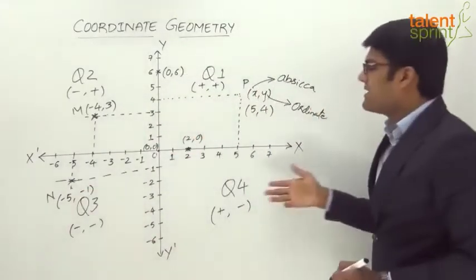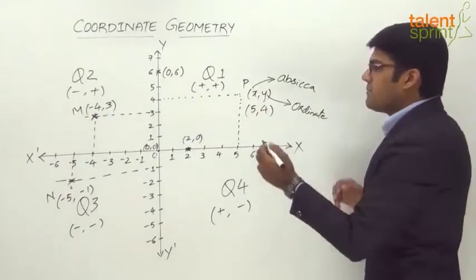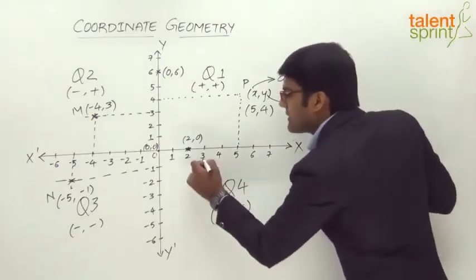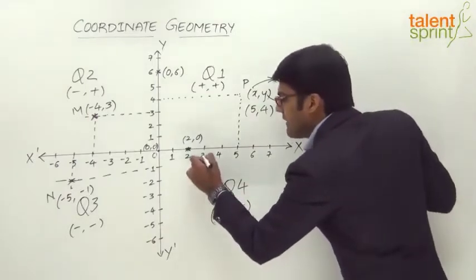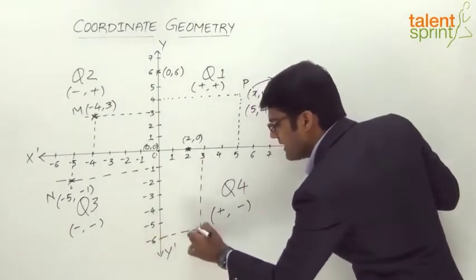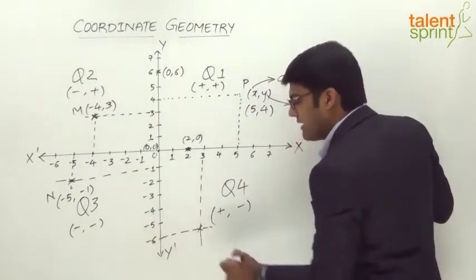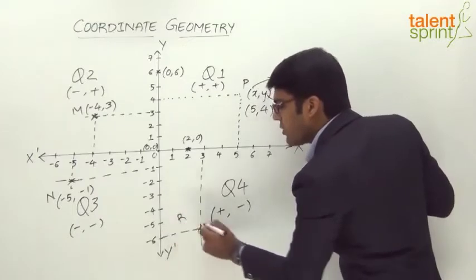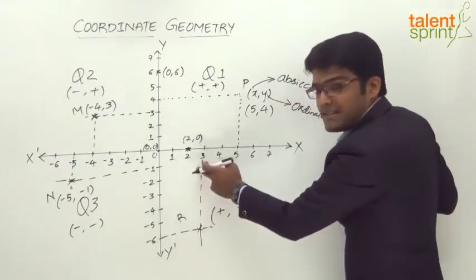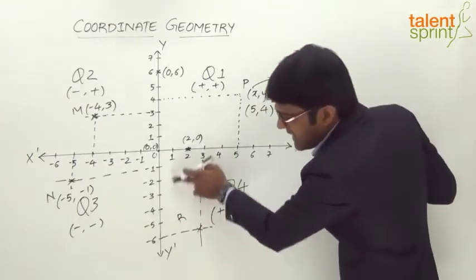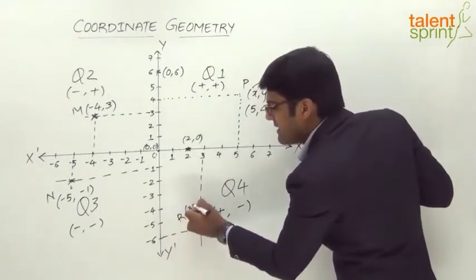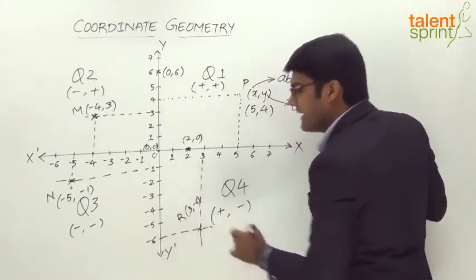And likewise in quadrant 4, let's say there is a point R. The horizontal distance is +3, whereas the vertical distance is -6. So point R can be described as (3, -6).